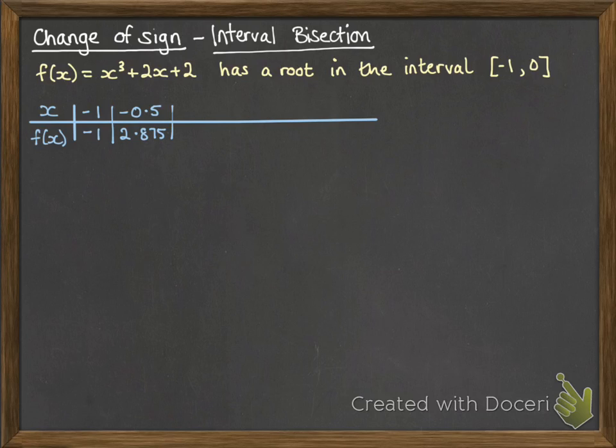And then we go halfway. So -1 and 0, half of that is -0.5. We try that out. Here we have a change of sign. So we know that our root lies between -1 and -0.5.